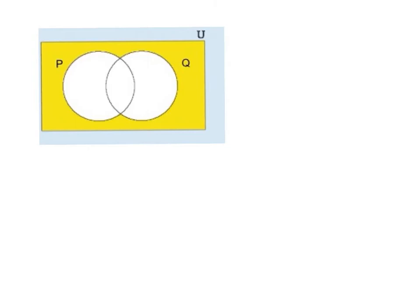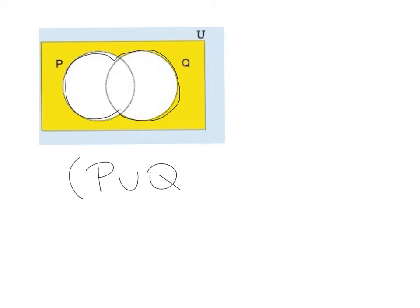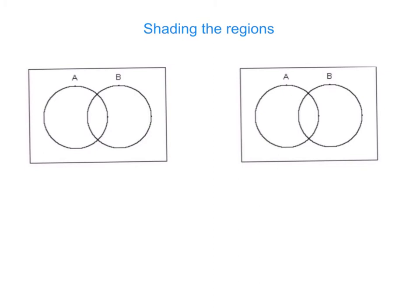The very last shaded region: we have set P and Q, and they are not shaded at all — only the yellow part outside them is shaded. Let's start with what's inside: we have P union Q, and everything is shaded apart from P union Q. So we put a bracket and a complement symbol — that means complement. So (P union Q) complement is the answer.